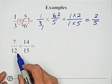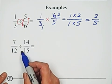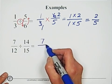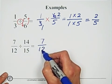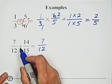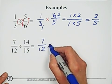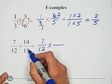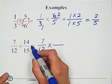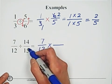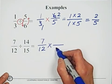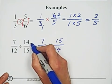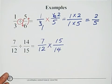Second example: seven over twelve divided by fourteen over fifteen. Write seven over twelve, convert division into multiplication, and flip the second fraction — fifteen goes to the top, fourteen comes to the bottom.